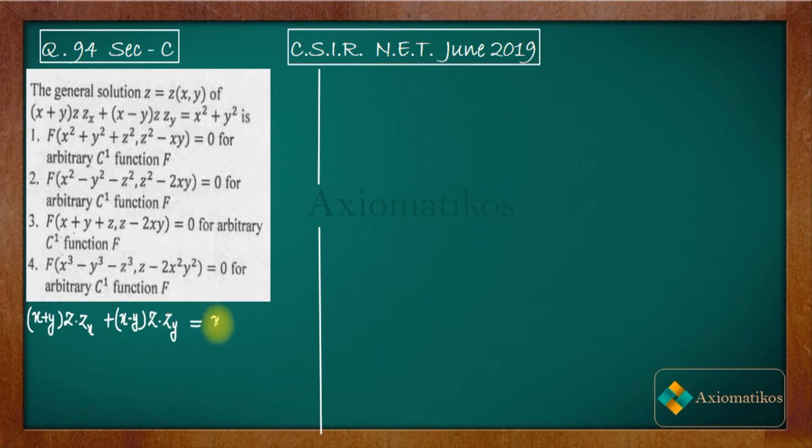Now if you have studied Legrand's linear PDE, you can actually see that it is a Legrand's linear PDE. For a Legrand's linear PDE, the auxiliary equation is given by: dx over (x+yz) equals dy by (x-yz) equals dz by (x² + y²). So this is what we will get.